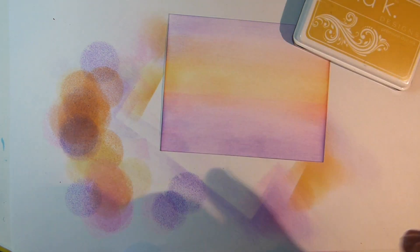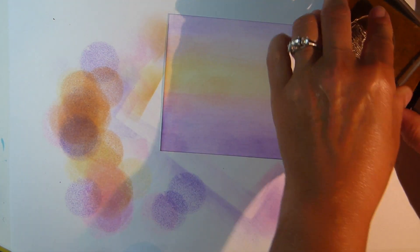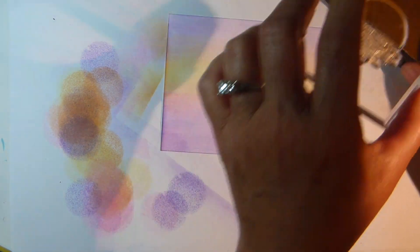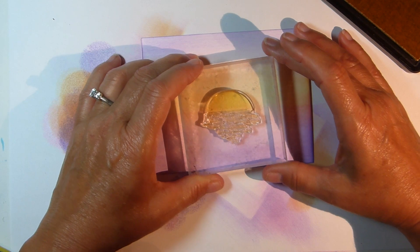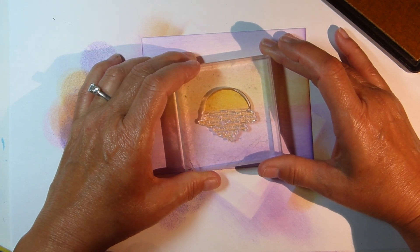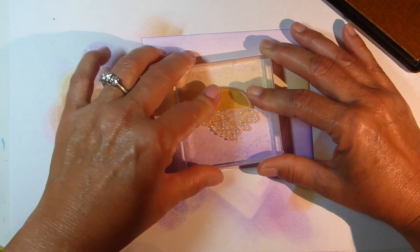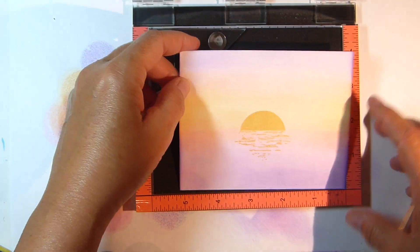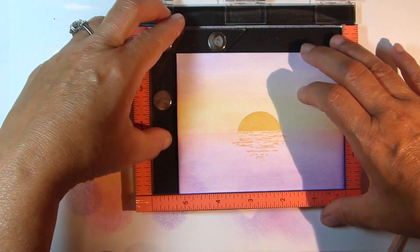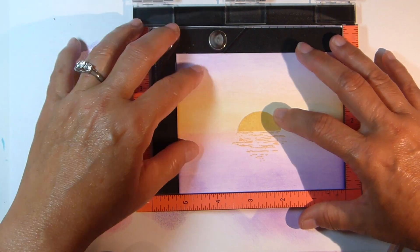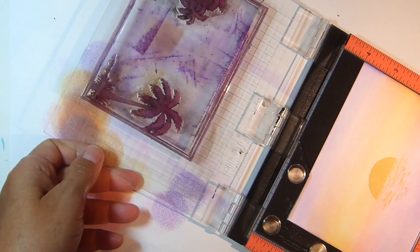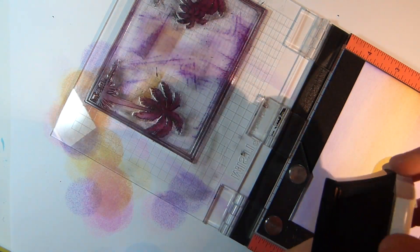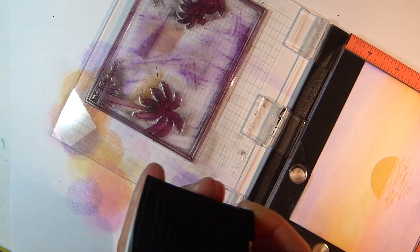Stamp the sun image from the Framescapes Tropical Skies stamp set using Gina K Sweet Corn ink, and you'll want to line the bottom of that sun up with the horizon line. Stamp the frame image from the Framescapes Tropical Skies stamp set using Versafine black ink, and you can use your MISTI stamp positioner if you have one or freehand stamp.